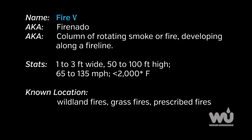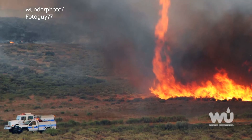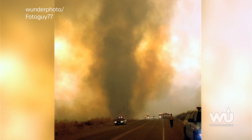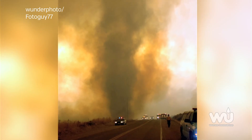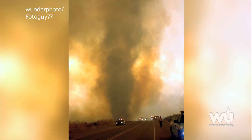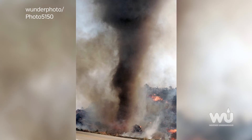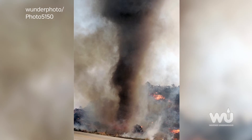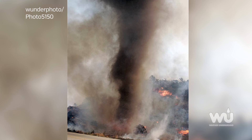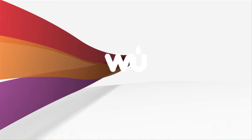Fire whirls are columns of rotating smoke and/or fire that can develop along a fire line. The intense heat and turbulent winds along the fire line can create circulating eddies of air that stretch vertically because of the hot conditions at the surface. Studies suggest that the burning rate of wildfires increases by 7 percent in the case of fire whirl formation.